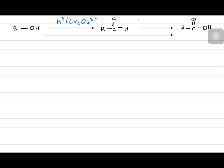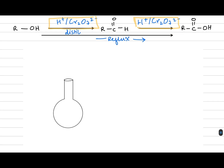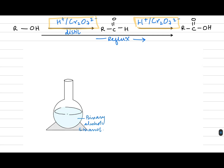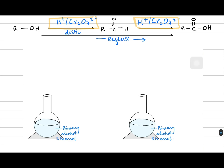In both cases we are using the same reagent — the oxidizing agent, H⁺ (acidified) and dichromate, which is orange in color. To make aldehyde you use distillation; we write 'warm and distill.' To make acid we use the reflux setup. We have setup number one on the left and setup number two on the right-hand side.